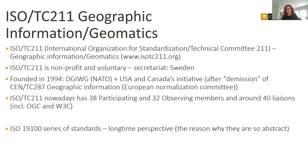I'd like to start by introducing both groups and then see what the synergies are between the two. ISO TC 211 is a technical committee that deals with standardization of all aspects of geographic information and geomatics. It was established in 1994, and today ISO has 38 participating members — among which Australia — and 32 observing members, with more than 40 internal and external liaisons, including the Open Geospatial Consortium and W3C.